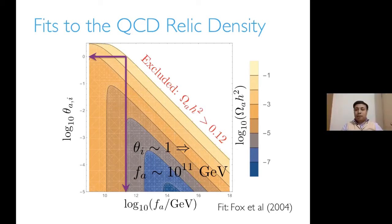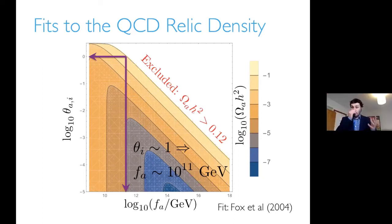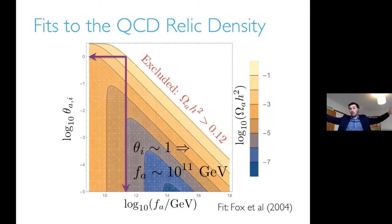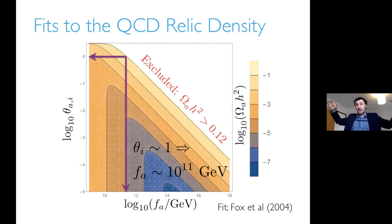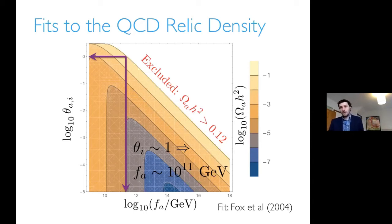Question: in the case of PQ symmetry breaking during inflation, is the patch where theta takes a certain value large enough to cover the observed universe today? Answer: yes. If the symmetry is broken during inflation, there are 60 e-folds of inflation to solve the horizon and flatness problems, meaning the current universe is entirely one patch. If inflation was just 60 e-folds, modes could be entering the horizon now corresponding to the very beginning of inflation, giving some inhomogeneities in theta at large scales. But with 60 e-folds, if symmetry is broken during inflation, you always get a completely uniform field.